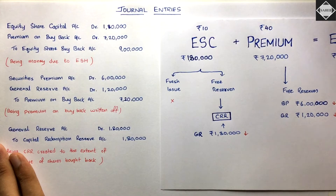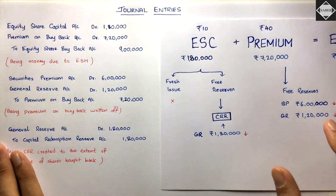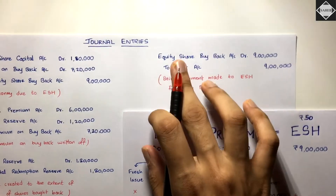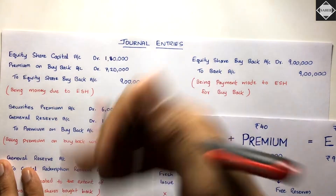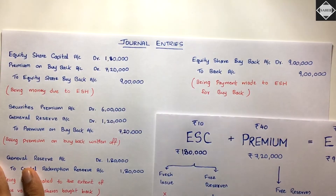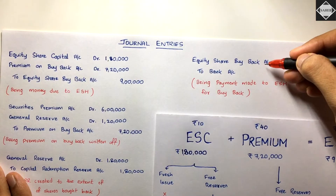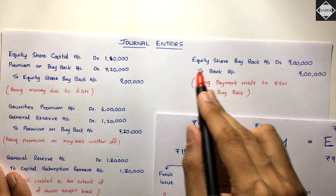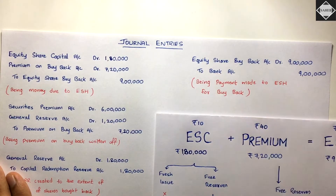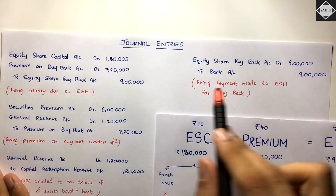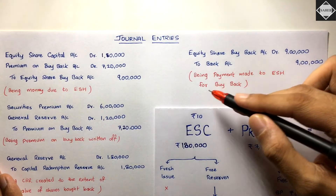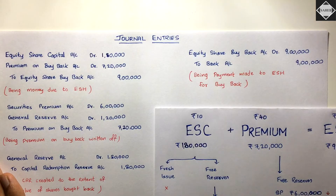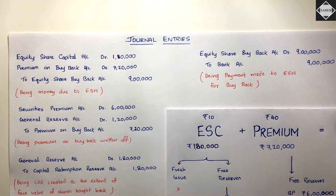Journal Entry 4 - Payment: Debit Equity Share Buyback Account ₹9,00,000; Credit Bank Account ₹9,00,000. Being payment made to equity shareholders for buyback. That completes the four journal entries. The main calculation was the three tests - the journal entries follow straightforwardly.